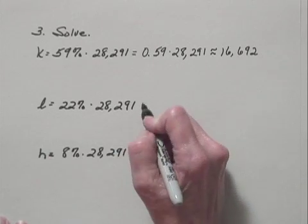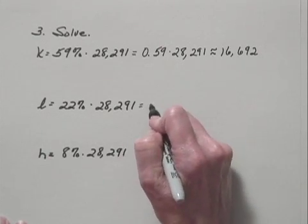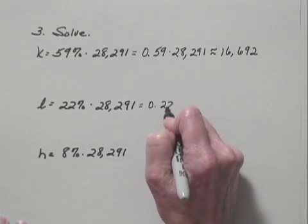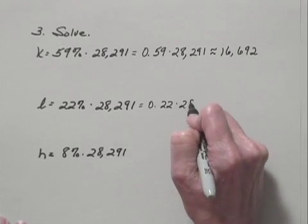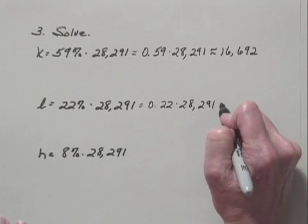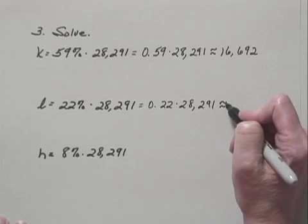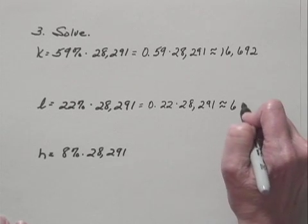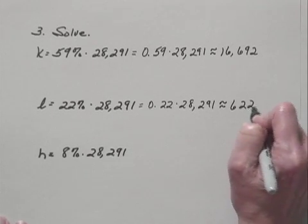Now let's solve this equation. Again we'll convert to decimal notation. 22% can be written 0.22, and we have times 28,291. And again multiplying and rounding to the nearest one, we find that this is approximately equal to 6,224.